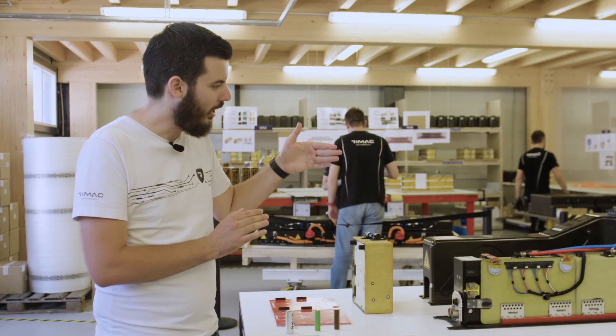As an example here in the Koenigsegg project our guys were fighting with the Koenigsegg guys over every millimeter because the package was so tight. For example where the driver's foot goes on the throttle pedal there is a small shape in the battery pack to allow for that. Over this couple of millimeters our guys were arguing for months with the Koenigsegg guys because every millimeter counted.